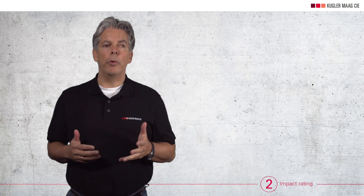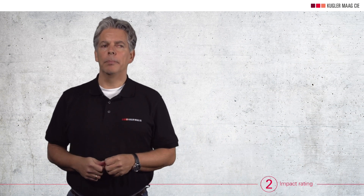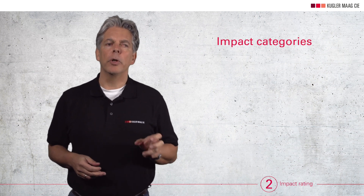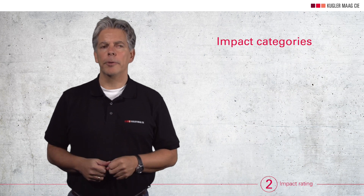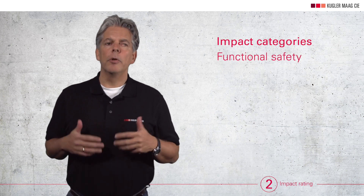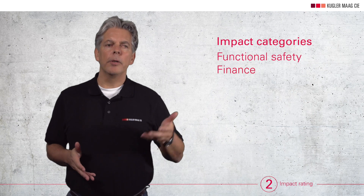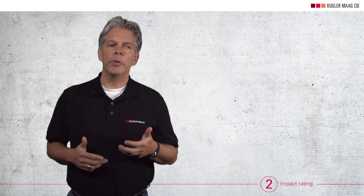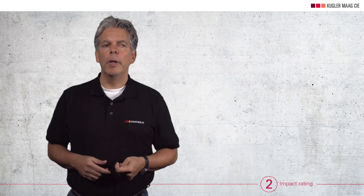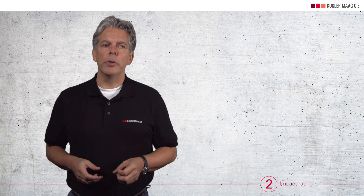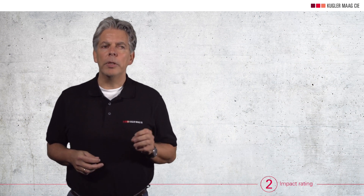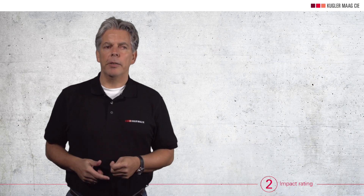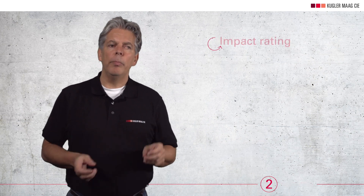Step number 2 on our string of pearls is called impact rating. Here we evaluate the damage scenarios according to what consequences they may have for your stakeholders. This includes functional safety, finance, operations, and privacy. Tables help to determine the severity of the damage. Note that not every stakeholder is equally affected by every damage scenario. With this, we have achieved our first target: we have rated the impact of damage.